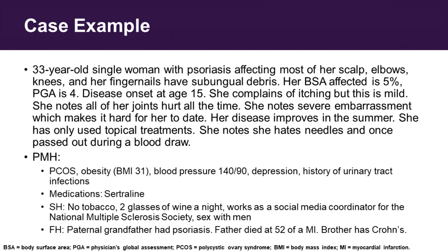There's a 33-year-old single woman with psoriasis affecting most of her scalp, her elbows, her knees, and her fingernails have subungual debris. Her body surface area is 5% and her global assessment is 4, so she has mainly scalp, elbows, knees with really thick lesions and nail disease. Started at age 15, she complains of mild itching. She says all of her joints hurt all the time, notes severe embarrassment and emotional impairment — it's hard for her to date. Her disease gets better in the summertime. She's only used topical treatments and hates needles — she's passed out during a blood draw. Her past medical history includes PCOS, obesity with BMI of 31, blood pressure of 140 over 90, a history of depression and urinary tract infections. Her medication is sertraline. She doesn't smoke. She has two glasses of wine at night and works as a social media coordinator for the National Multiple Sclerosis Society and has sex with men.